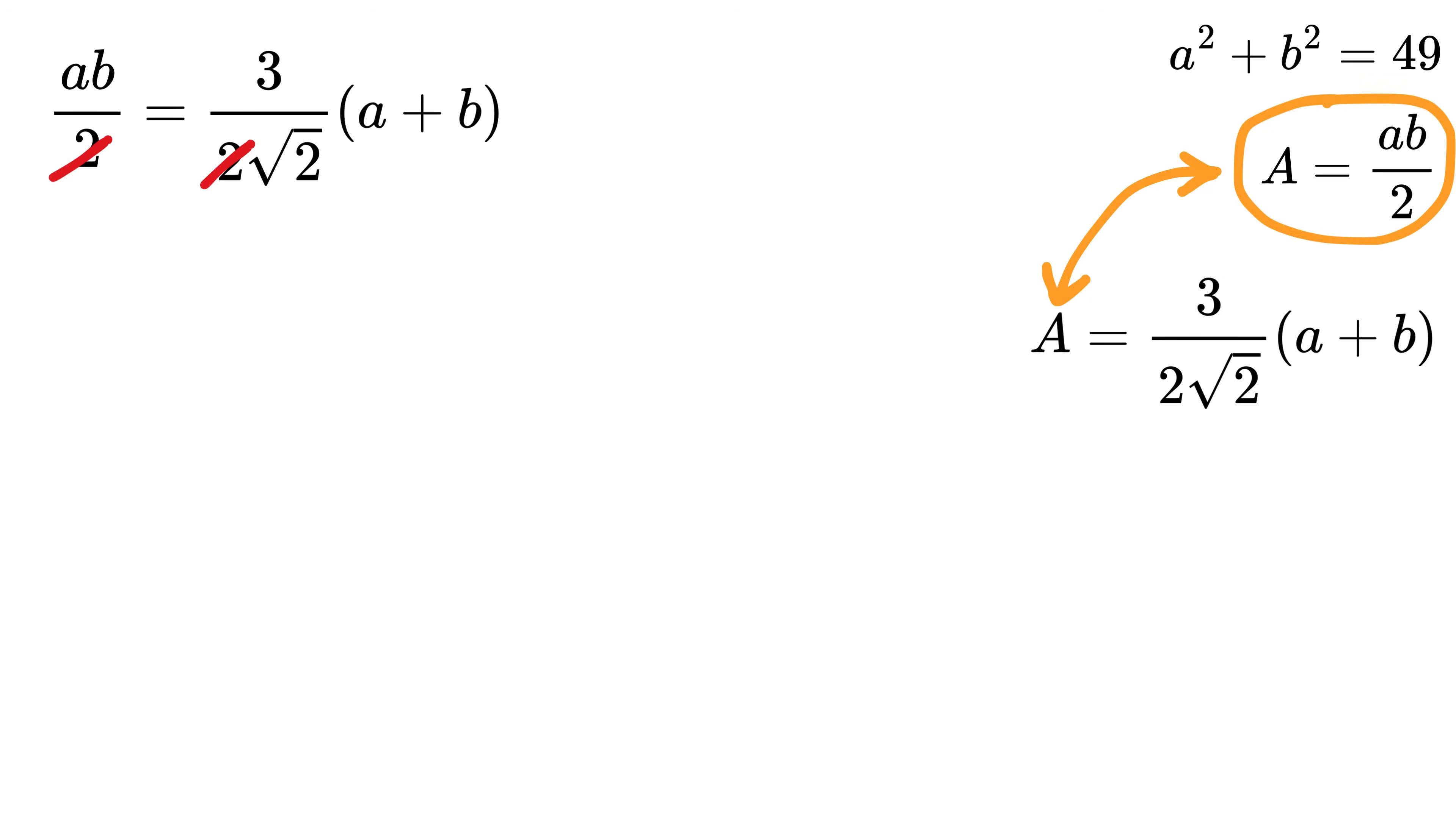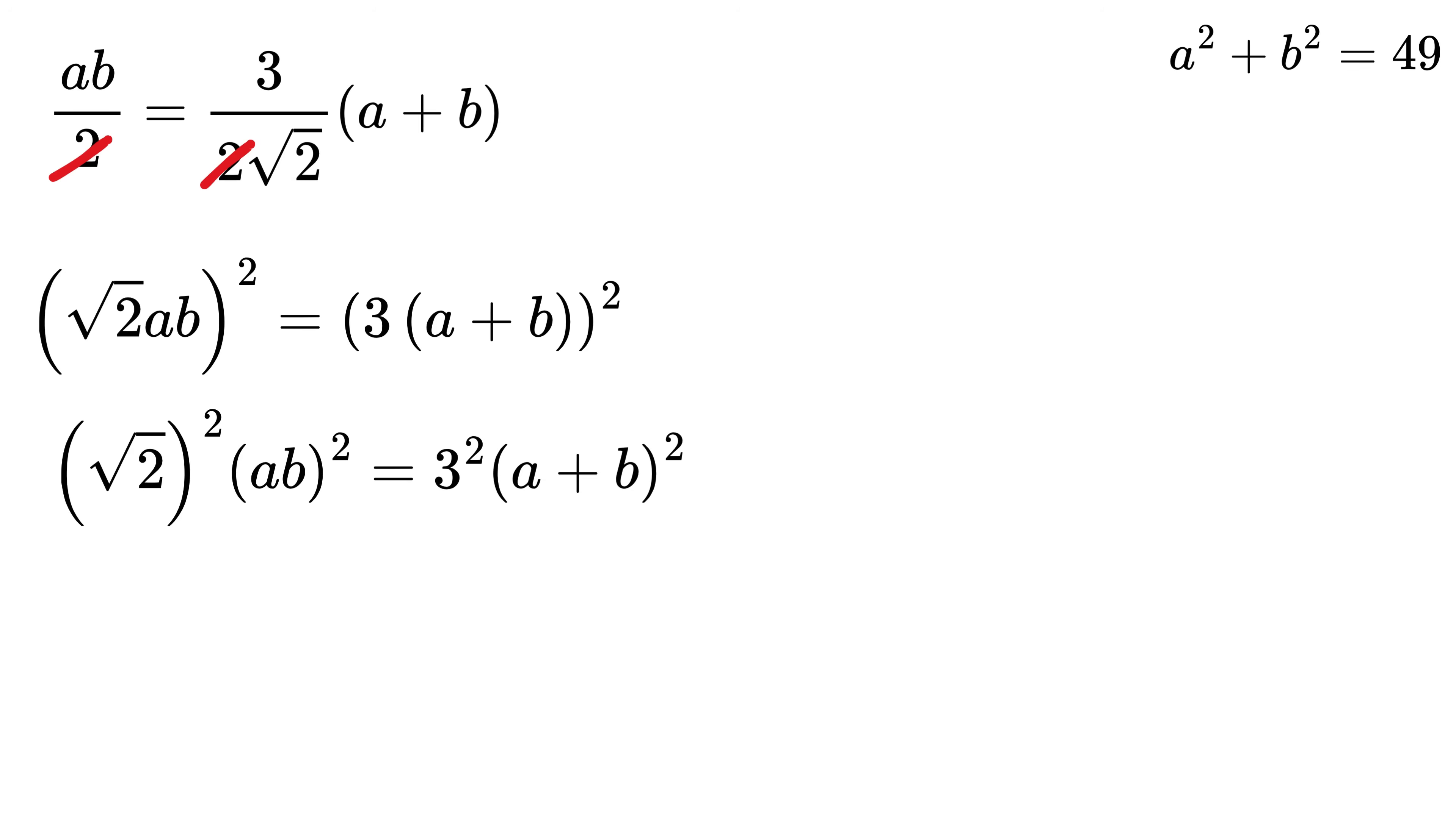Cancel out 2 from both the sides, then take root 2 to this side to get root 2 times AB equals 3 times A plus B. Now square both sides. We get square root of 2 whole squared times AB squared equals 3 squared times A plus B whole squared. Now expand this. We get A squared plus B squared plus 2AB.